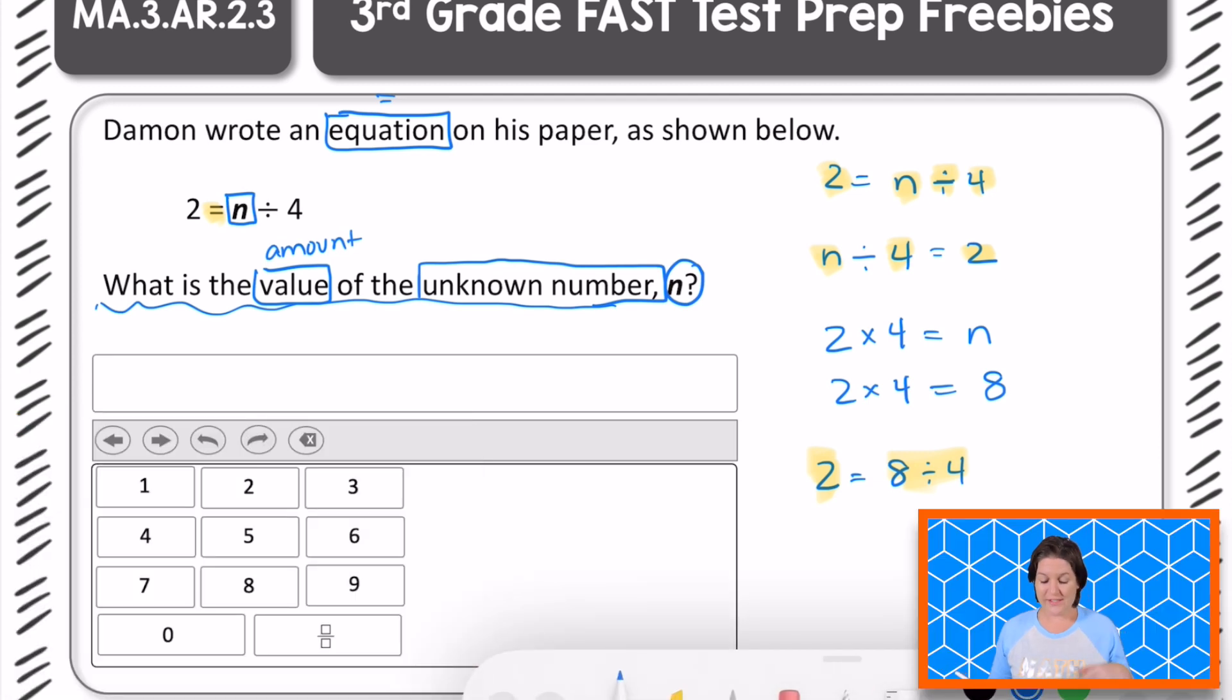And the question said, what is the value of the unknown number n? And n equals how much? 8, that's right. So if this were the equation editor tool right here, we would just tap that 8 button in order to input your answer, 8, right there. And that is how you solve this problem.